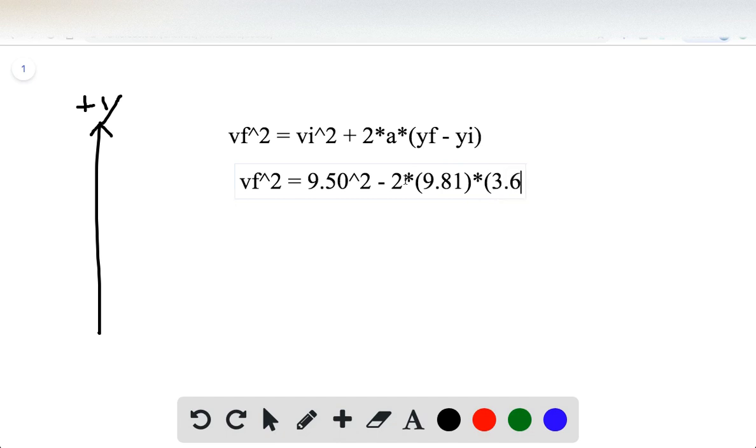And the change in distance, I'm assuming that y initial is zero, is going to be 3.60 meters. So solving, 9.50 squared is 90.25, and 2 times 9.81 times 3.60 is 70.63.